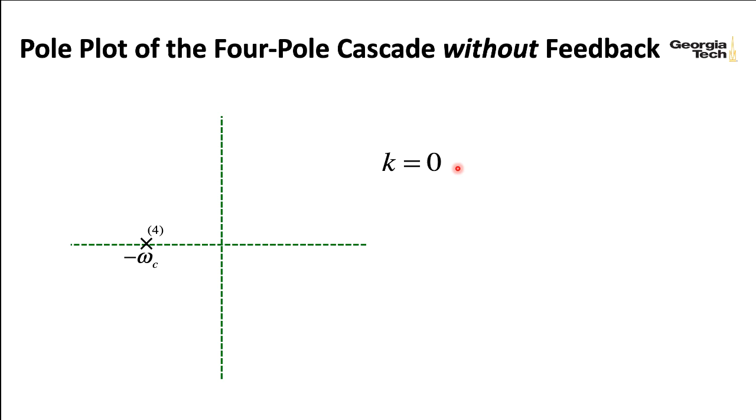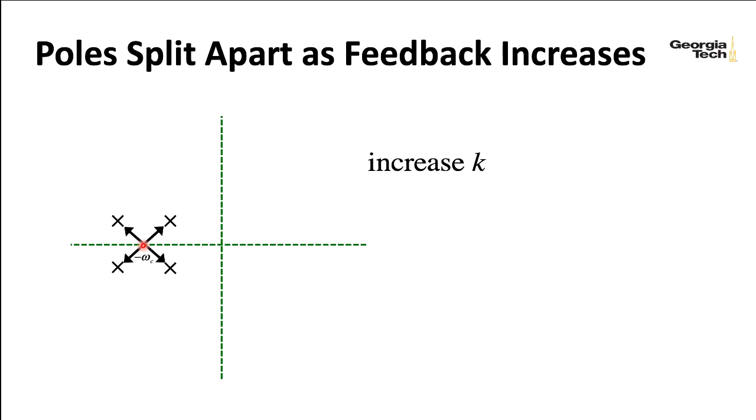As you increase the amount of negative feedback, those poles split away from that particular point where they're all shared. Two of them start shooting out to the left, two to the right, and they shoot out at these 45-degree angles.